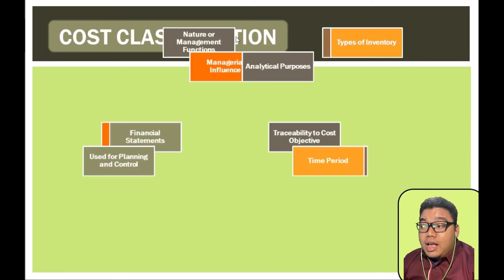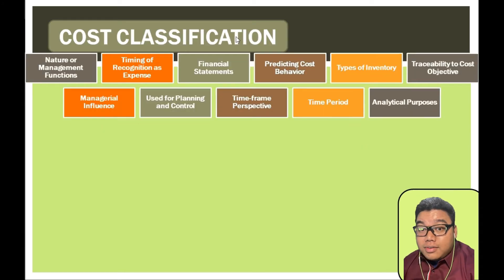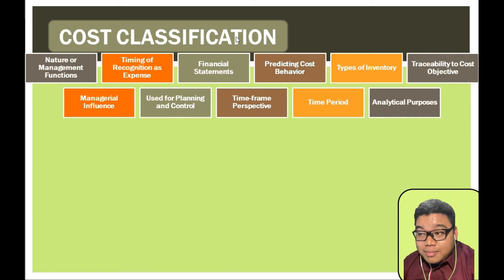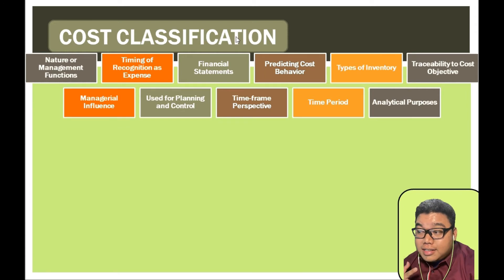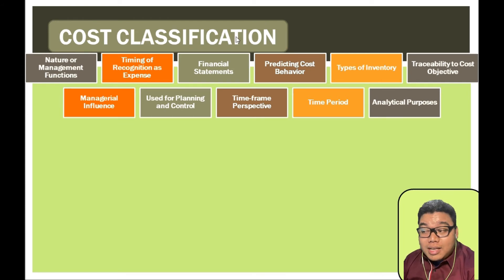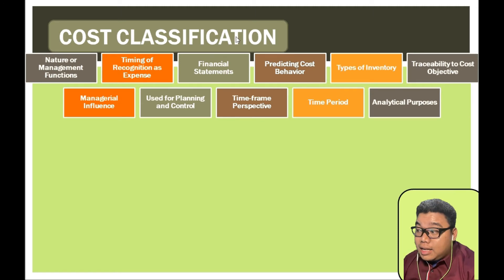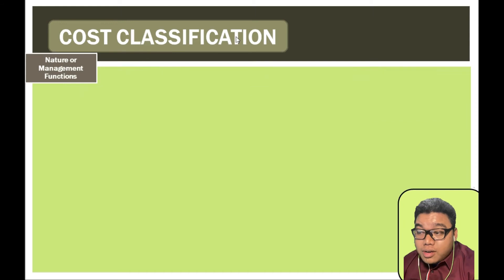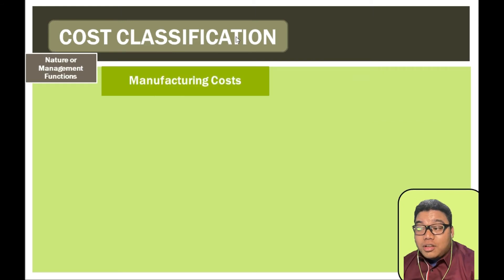Cost classifications: we have different types of classification for costs. These include classification according to nature or management function, timing, financial statement classification, cost behavior, inventory, cost objective, managerial influence, planning and control purposes, time frame, and analytical purposes. We go first to classification according to management functions.